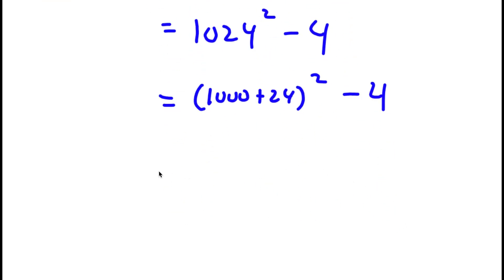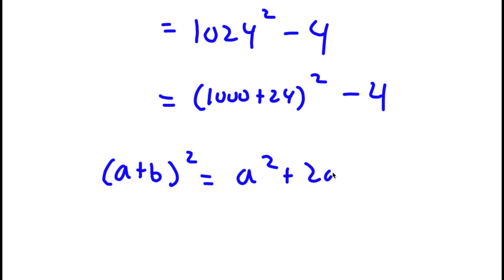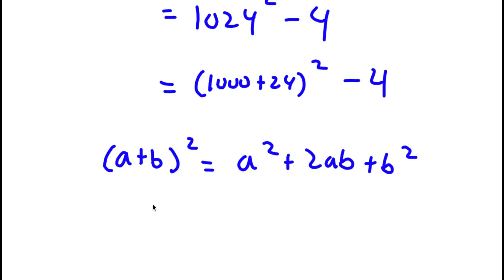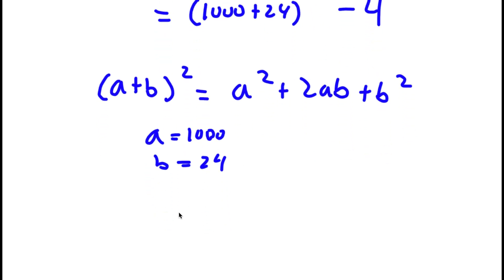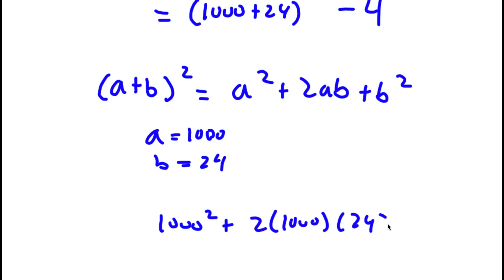Now, if I have something in the form (a + b) squared, this is equal to a squared plus 2ab plus b squared. In this case, a is equal to 1,000 and b is equal to 24. So I have 1,000 squared plus 2 times 1,000 times 24 plus 24 squared.